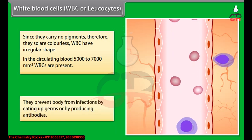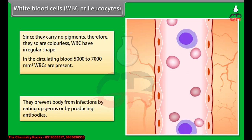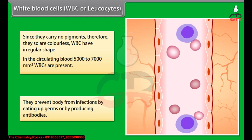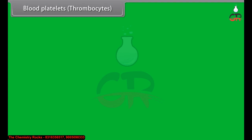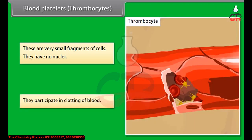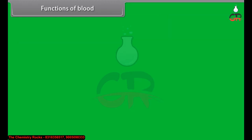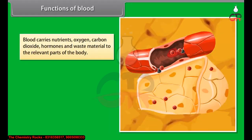Blood platelets (thrombocytes) are very small fragments of cells with no nuclei. They participate in the clotting of blood. Blood carries nutrients, oxygen, carbon dioxide, hormones and waste material to the relevant parts of the body. Some medicines when taken into the body are also distributed through blood.